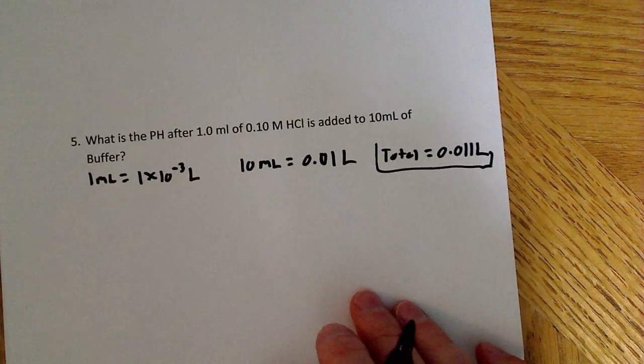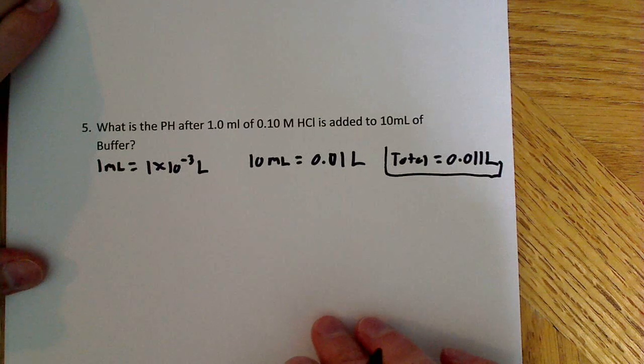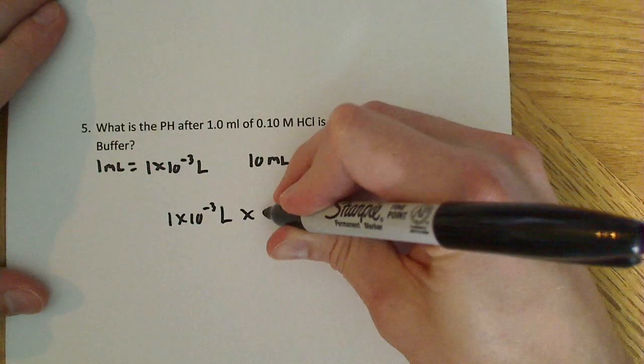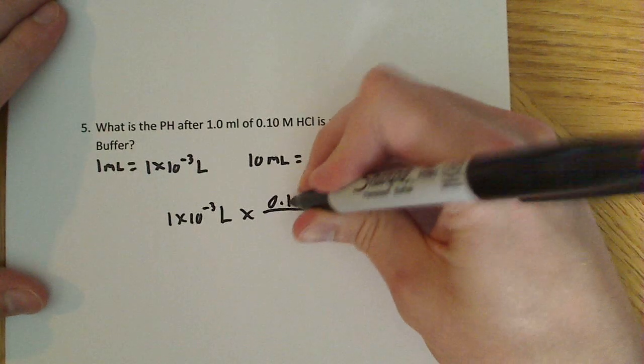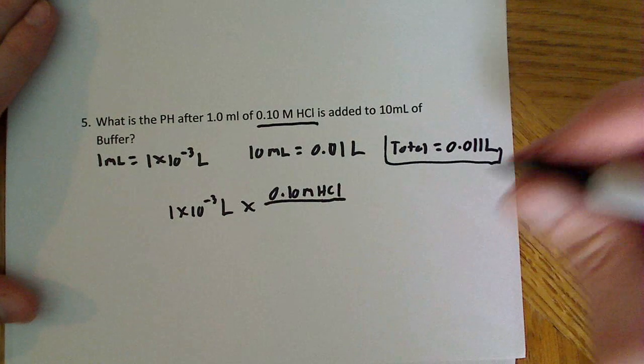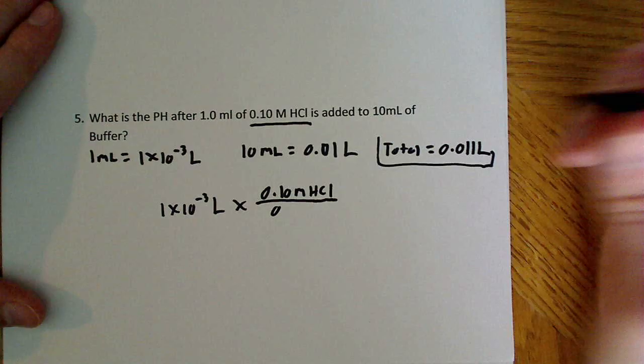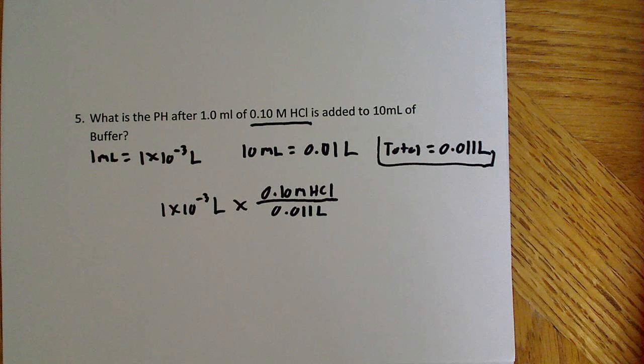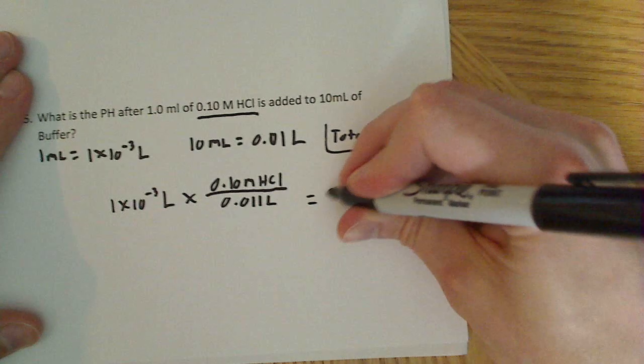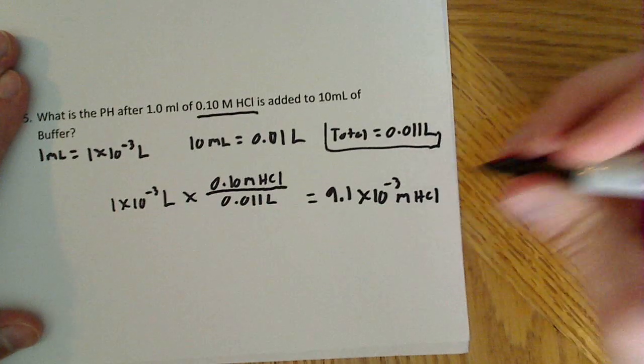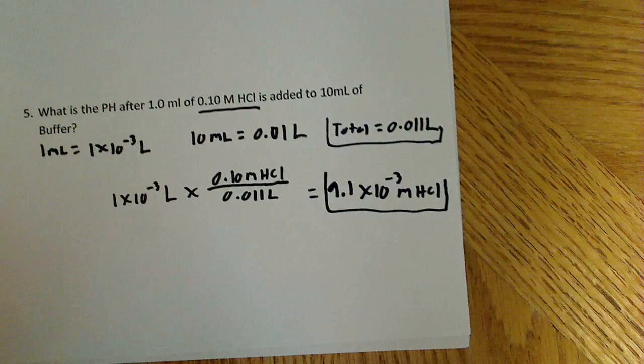So now we need to see how the concentration of HCl changes once it's added to this buffer solution. So to do that, we're going to say 1 times 10 to the negative third liters is going to be multiplied by the 0.10 mole HCl, the initial concentration of HCl. And that's going to be over the total number of liters of the new solution. So once you have this written down, you can plug it into a calculator. And what you'll find out is that it's equal to about 9.1 times 10 to the negative third moles of HCl. So that's the new concentration of HCl.